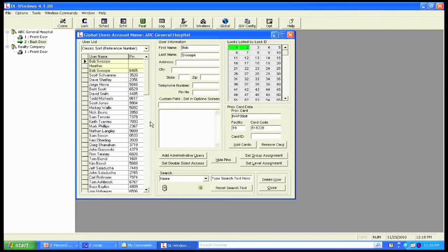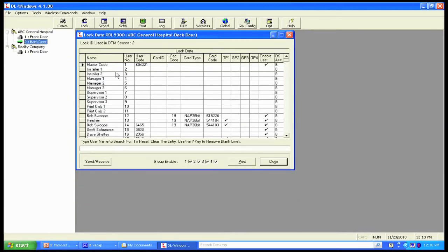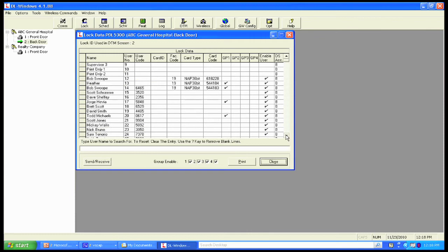We're going to do this door by door. We happen to be at the back door, so when I come up to my software, I'm going to double click the back door on my account tree, and I'm going to get the lock data screen. And from here, you'll notice that I've got it completely set up. All my users, they're enabled, all set to go. So what I want to do here is this button here, send-receive, allows me to initiate the programming.